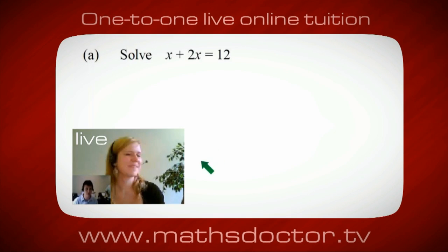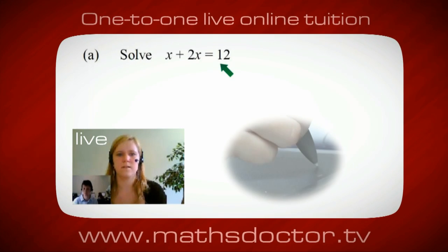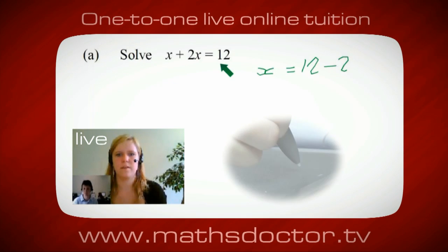OK Marie, let's have a look at this one. So solve x plus 2x equals 12. So what do you think you do first? OK, well, I want x on its own, so I would put x equals 12 minus 2x.